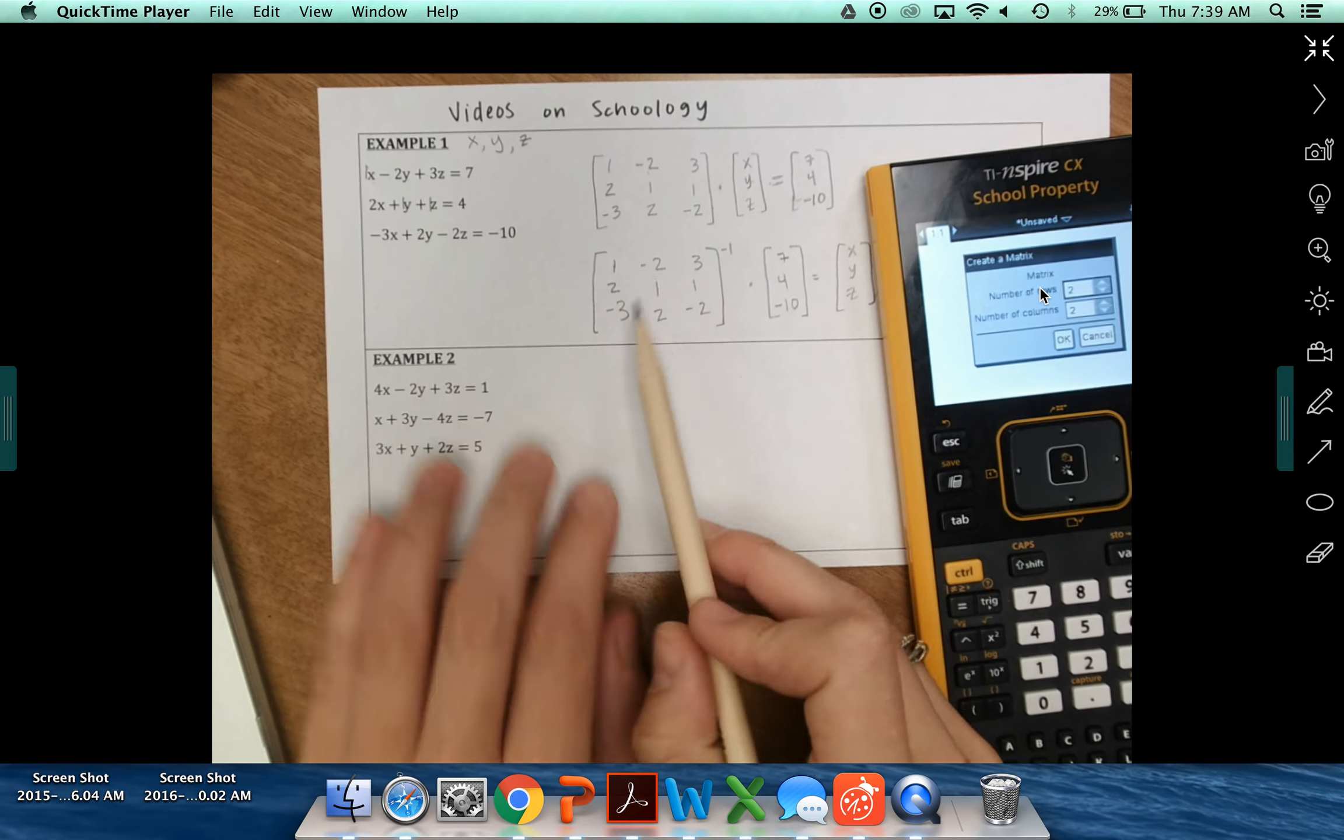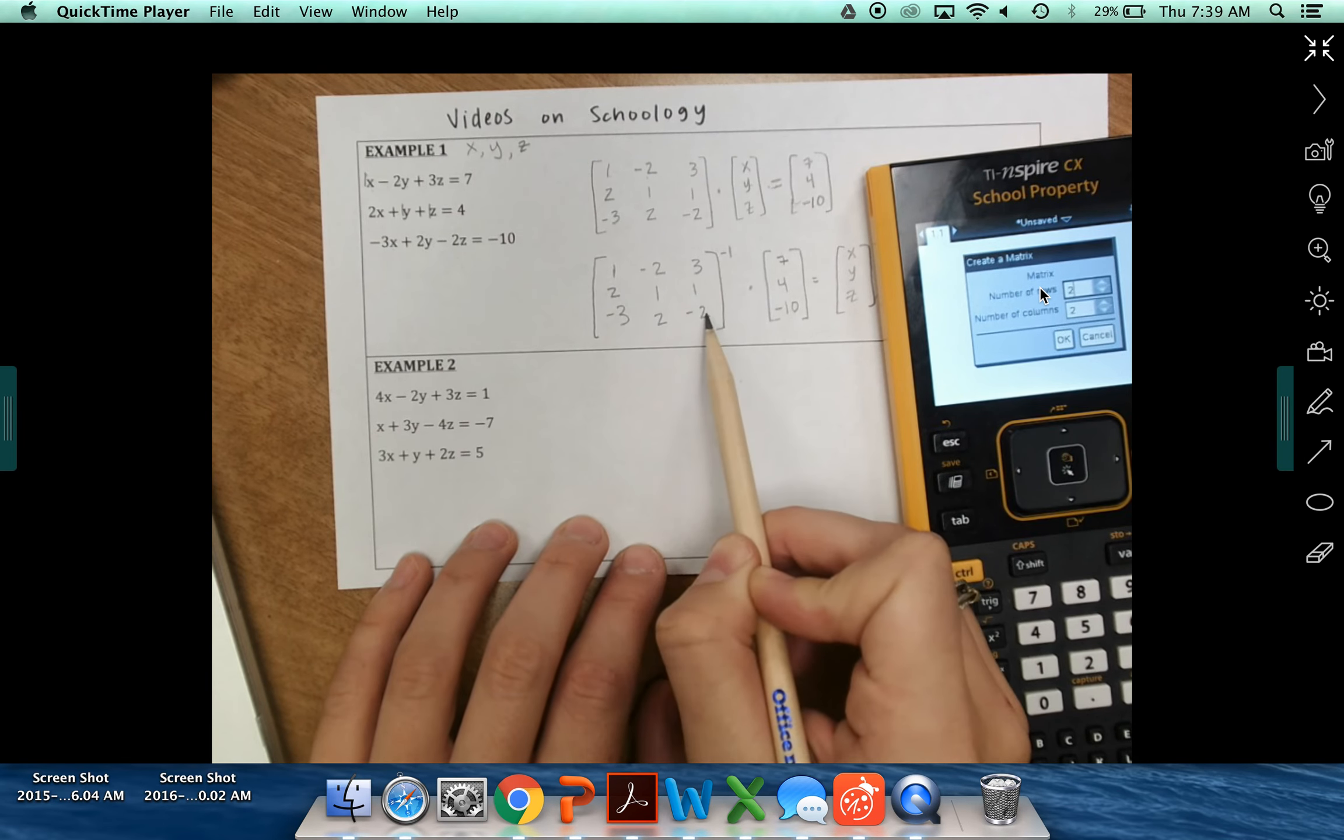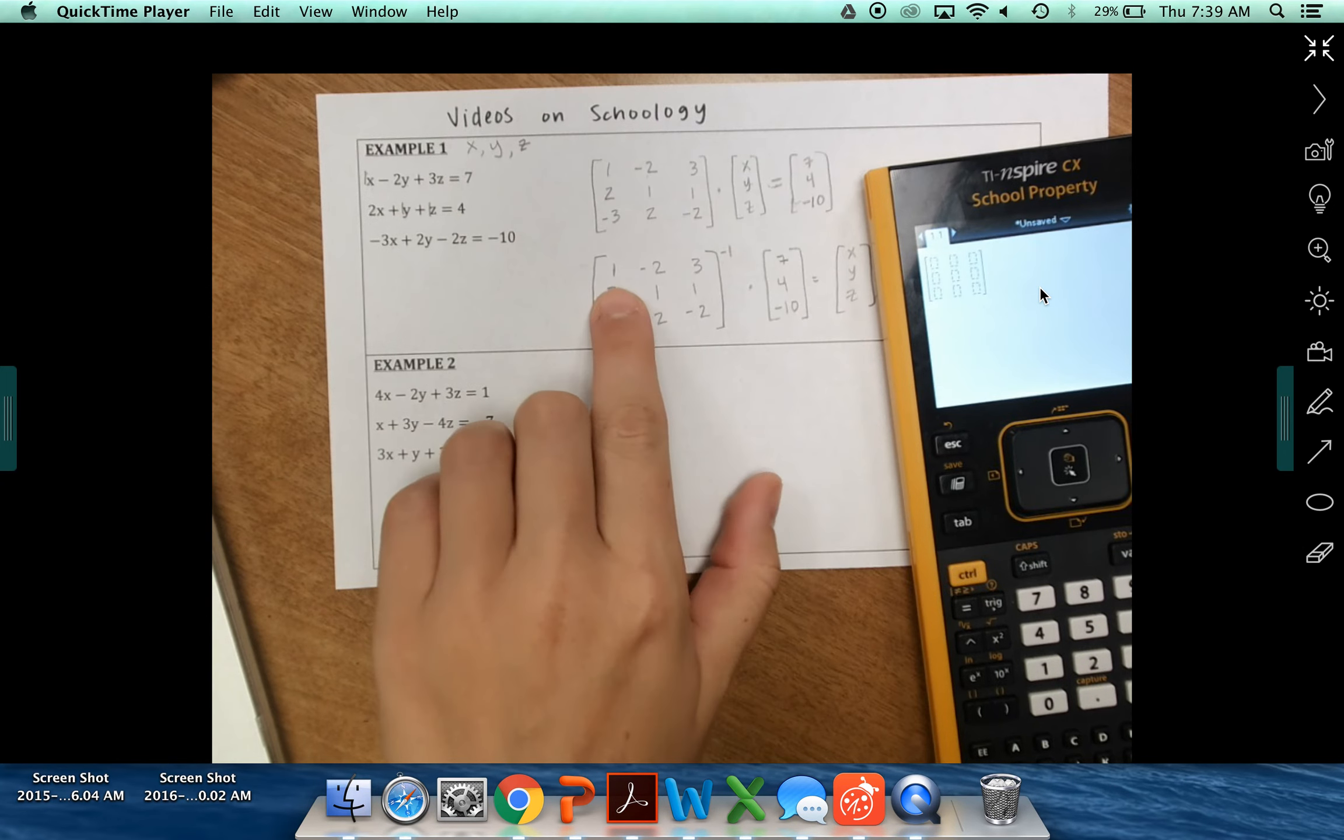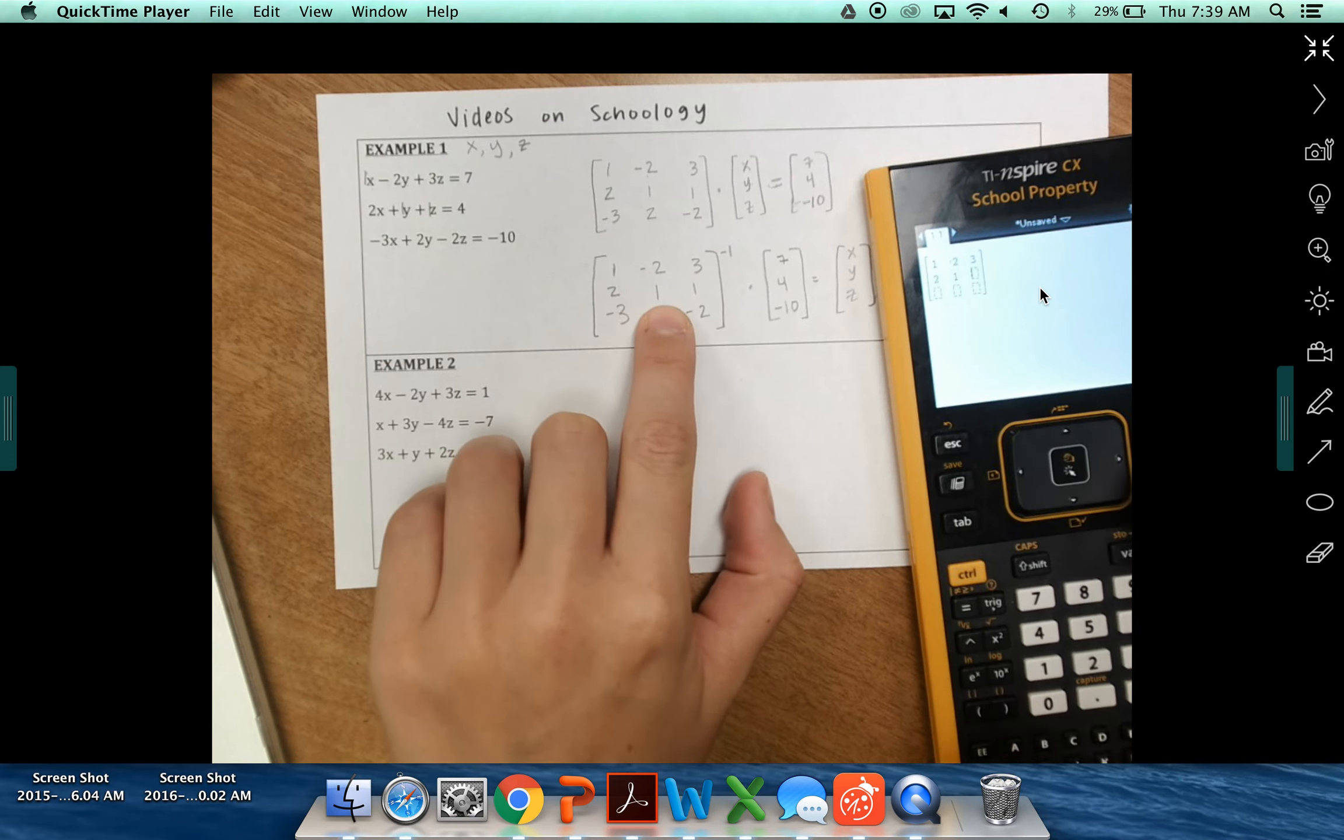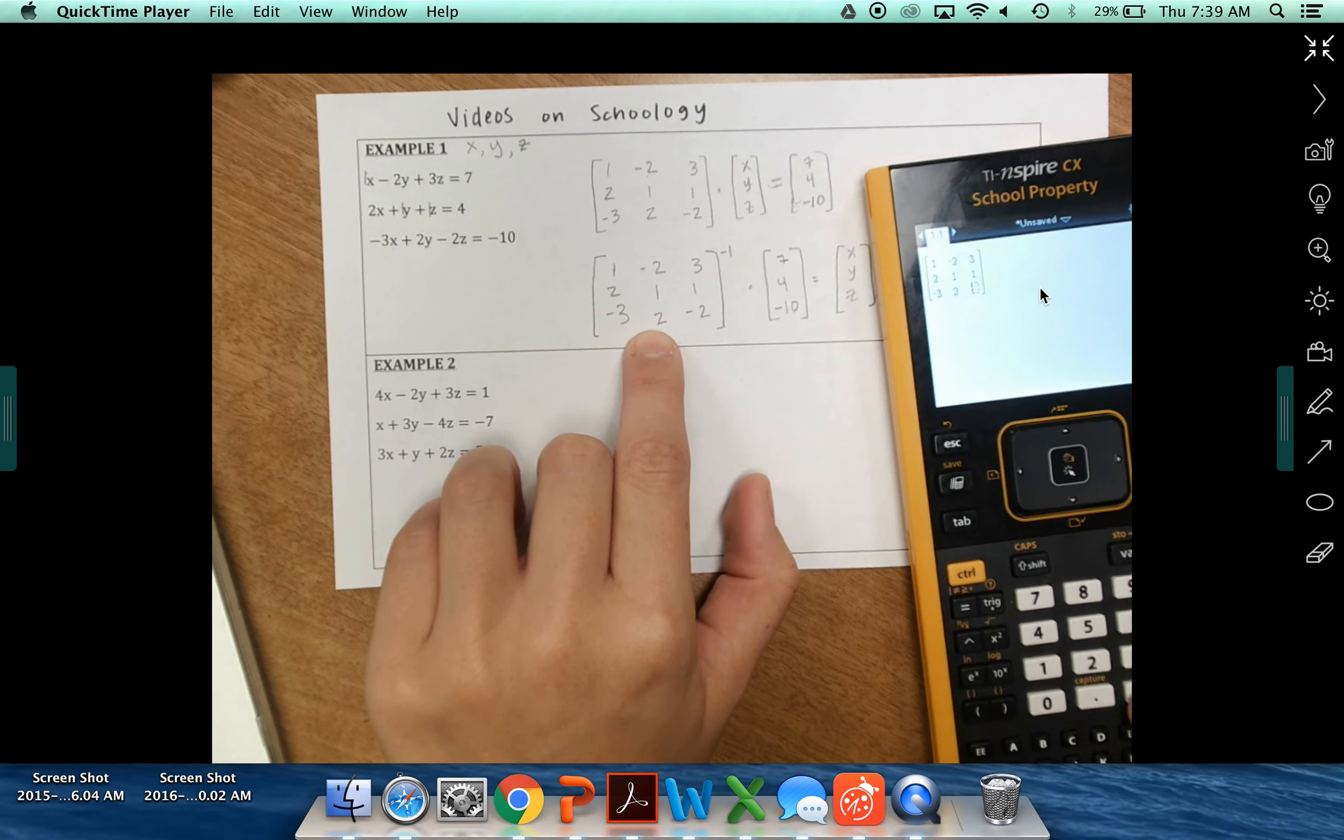Now in this case, this is the first one we're entering in. This is 3 rows, 1, 2, 3 rows by 1, 2, 3 columns. So put a 3 here, press tab, delete that 2, put a 3. So now I've got a 3 by 3 matrix. Now I can type these values in. I've got 1, negative 2, 3, 2, 1, 1, negative 3, 2, and negative 2.